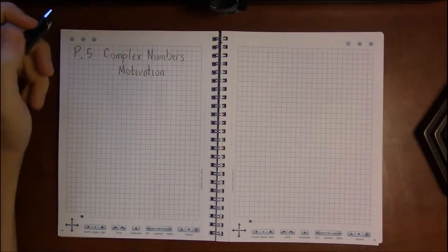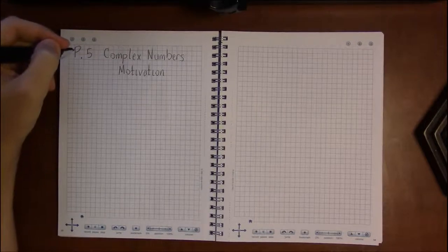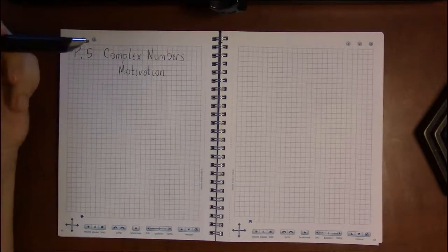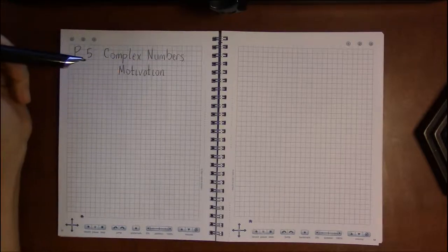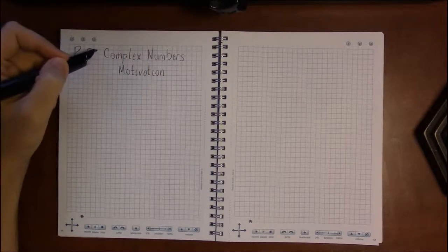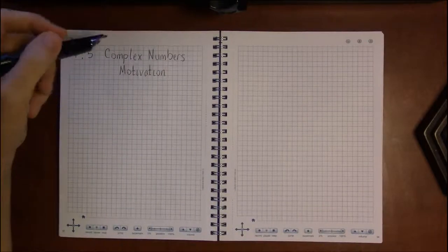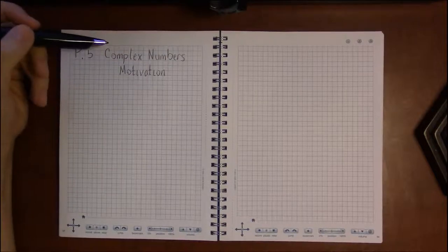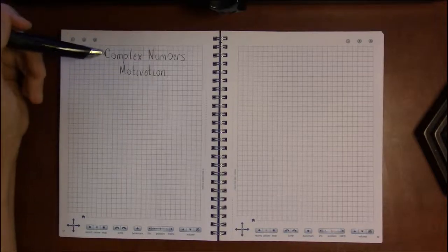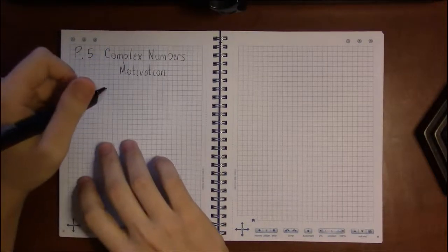We're going to jump to section P5, which deals with complex numbers — and we're going to need this before we dive into chapter 2. Math isn't just about following rules; although in college algebra we're mainly learning what the rules are, math is also about learning how to break rules and do so without breaking all of mathematics.